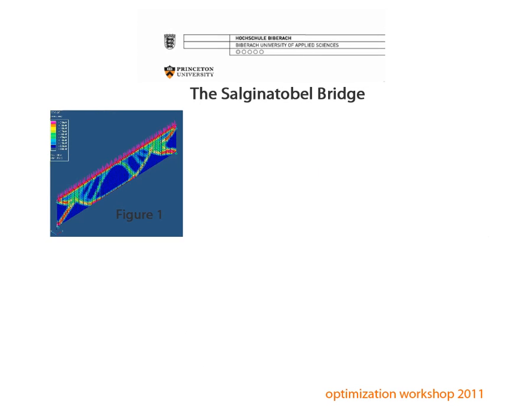The analysis and optimization results of the default configuration are shown here. Figure 1 shows the contour plot of the element densities. Small density values indicate that the element is not carrying structural loads, hence it is not needed. Low density elements are colored in blue. High density elements refer to the structurally important units and are colored red.